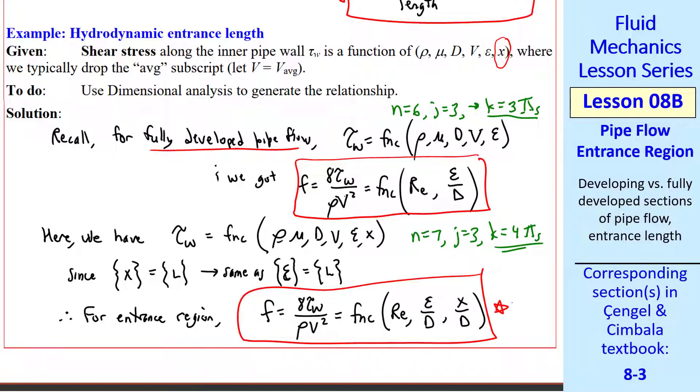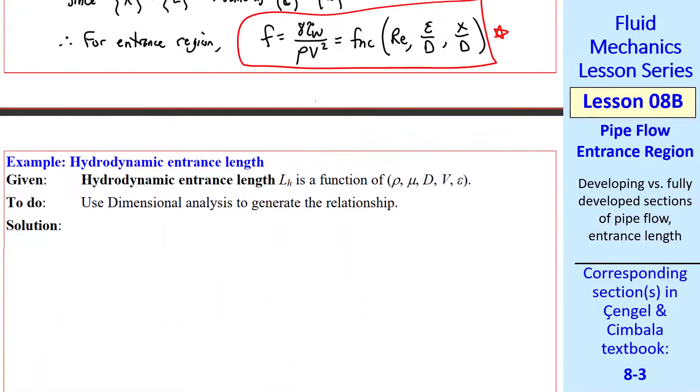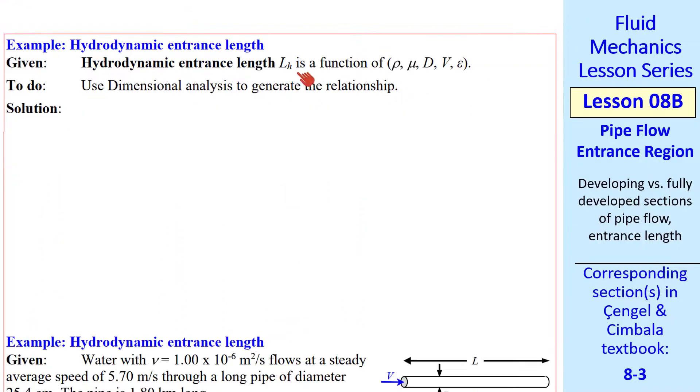Let's do a similar analysis for the actual entrance length. L_h is a function of rho, mu, d, V, and epsilon. We use dimensional analysis again.